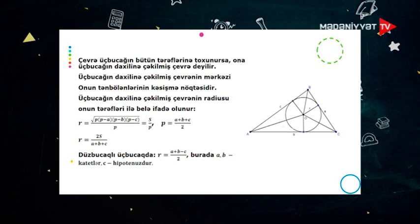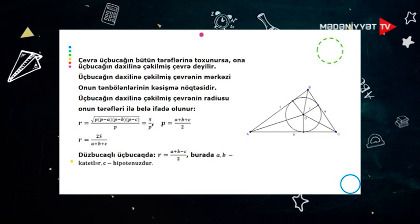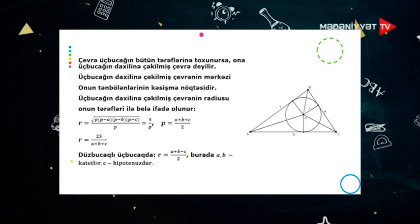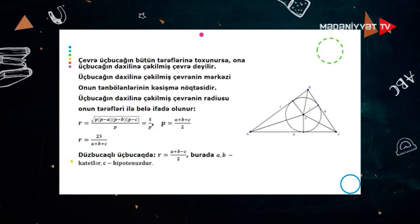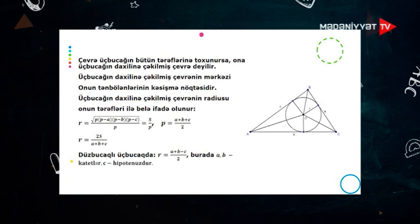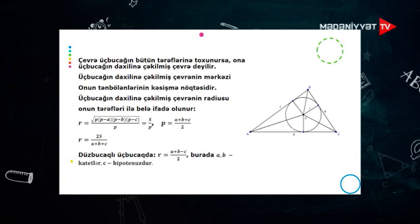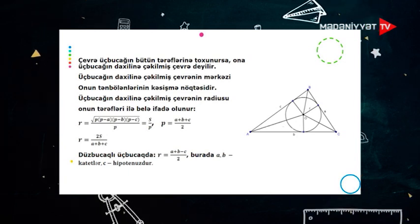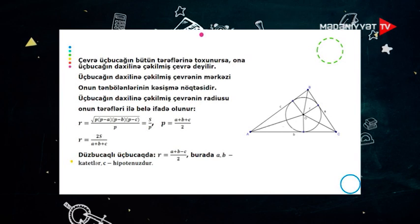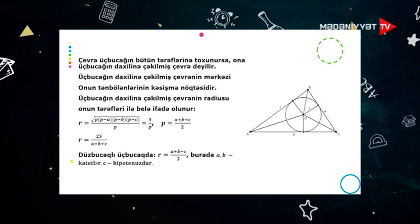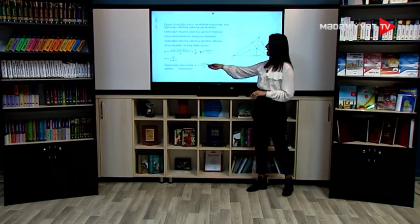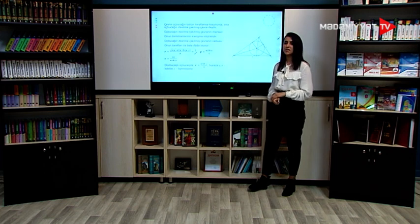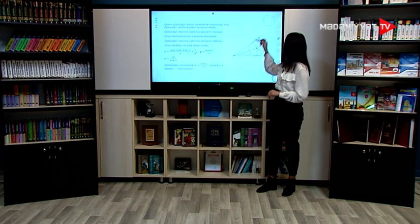Digər bir düsturumuz: r = 2S / (a + b + c). Əgər üçbucağımız düz bucaqlı üçbucaqdırsa, bu zaman onun radiusu r = (a + b − c) / 2-yə bərabərdir. Burada a və b katetlər, c isə hipotenustur.